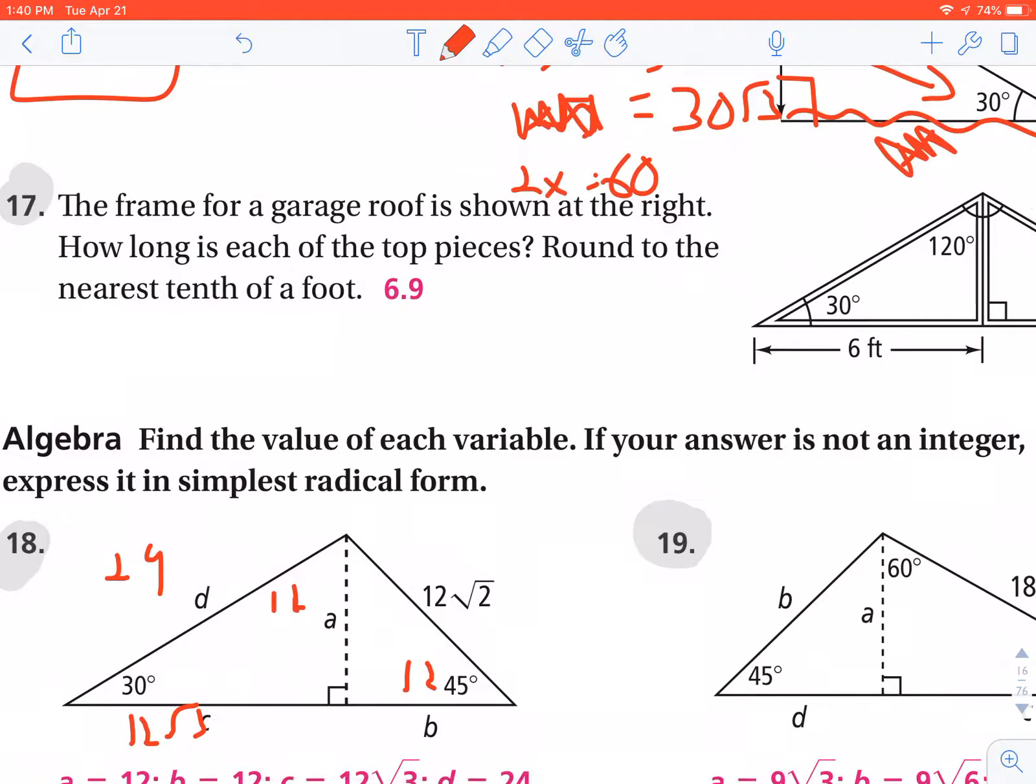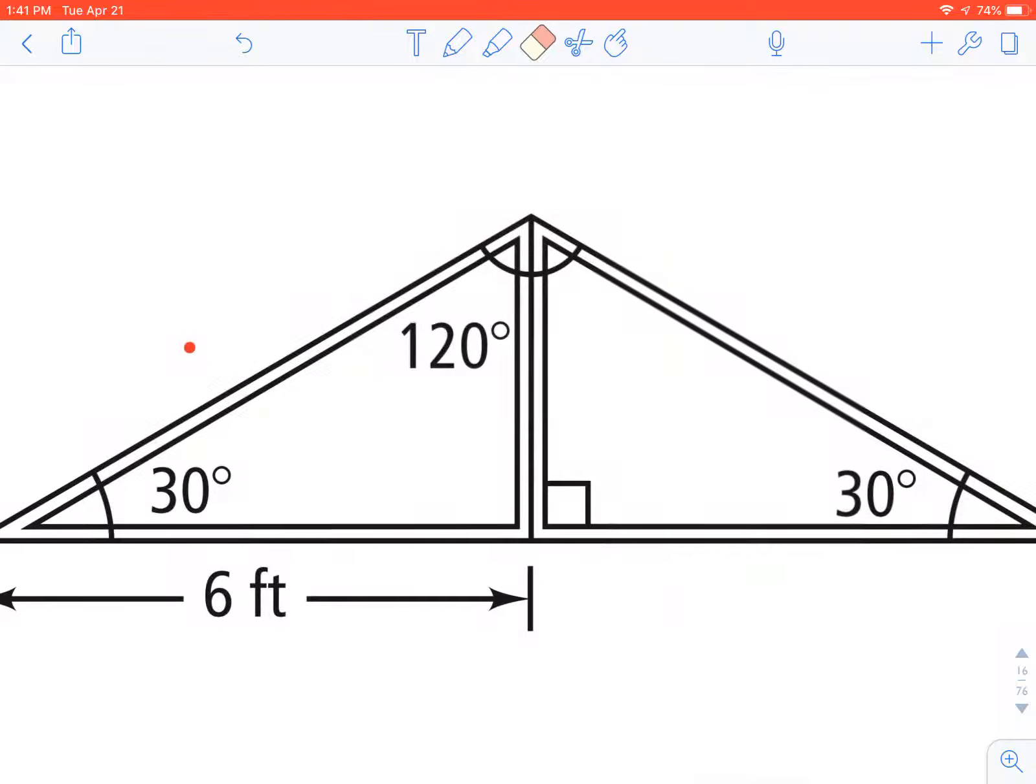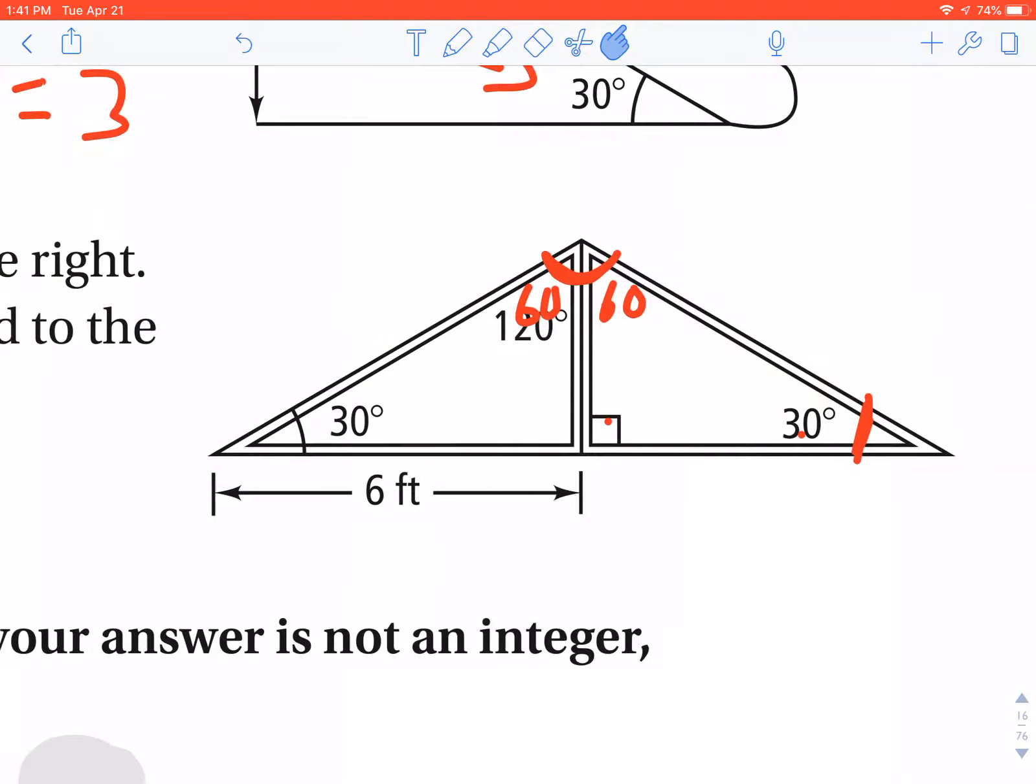Number 17, it says the frame of a garage roof is shown at the right. How long is each of the top pieces round to the nearest tenth of a foot? So they're asking you, how long is either this piece or this piece? They don't need you to find both. They just want to know one of them. Now, this picture does a poor job here. The angle that is 120 degrees is this entire angle. You can't assume that this line is cutting this angle in half. You cannot do that because I didn't tell you that. You can't assume the contractor built this perfectly. But what I do know is that if this is the right angle, which it is, and this angle is 30, which it's given to me to be, and this whole thing is 120, well, 30 plus 90, subtract that from 180, then that tells you that that has to be 60, therefore that has to be 60. So that's just kind of a side note. You can't assume this 120 angle is bisected. You have to use a little bit of triangle sum theorem there to figure that out.